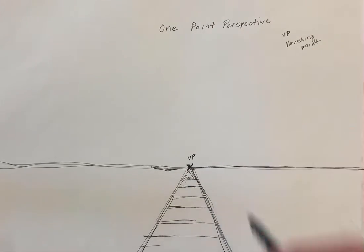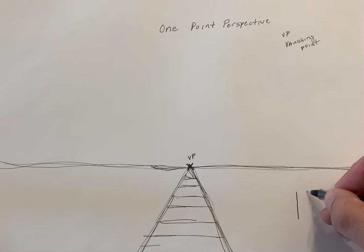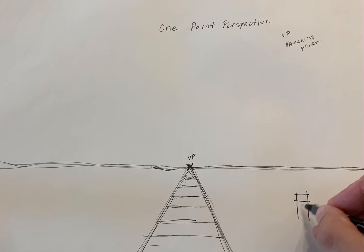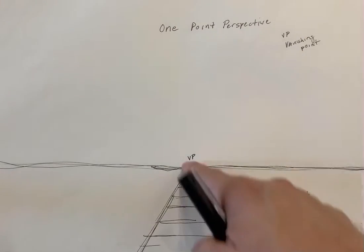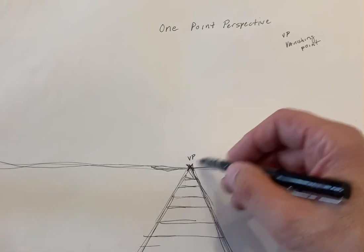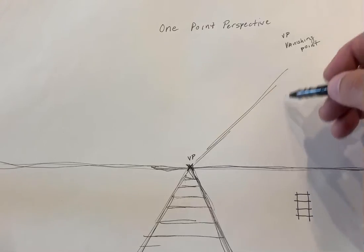What we're really talking about is a train track seen from above that would look like two parallel lines. But seen in perspective — one point perspective — they will recede to a vanishing point on the horizon line. You can use this same set of rules, that same vanishing point, for doing other things in the scene.